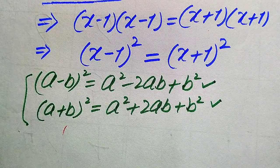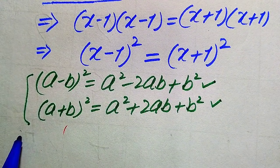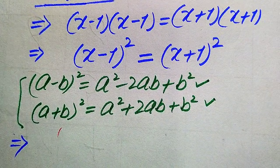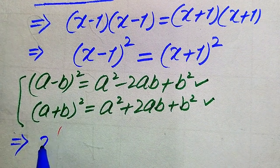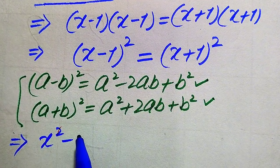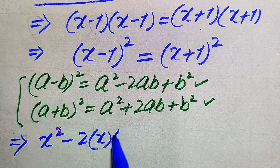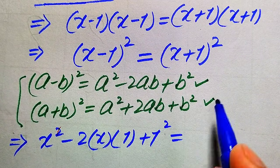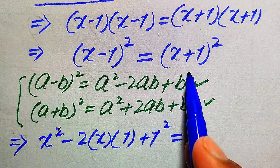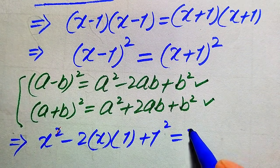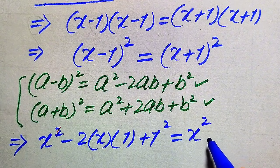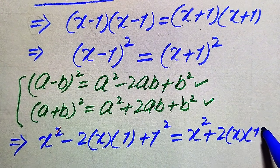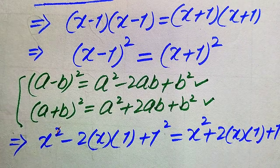After applying the formulas, the equation becomes: x² - 2(x)(1) + 1² = x² + 2(x)(1) + 1².